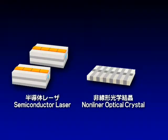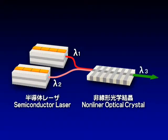Two semiconductor lasers and a nonlinear optical crystal compose the custom-made compact solid-state laser. Lasers of lambda-1 and lambda-2 are converted to lambda-3 inside the nonlinear optical crystal, according to expressions.